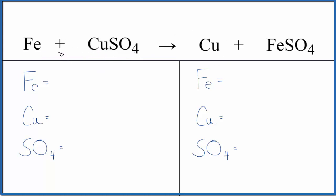First off, let's count the atoms up on each side of the equation. One iron atom, one copper atom, and then for SO4, this is a polyatomic ion. It appears on both sides, so we're going to count that as one thing.